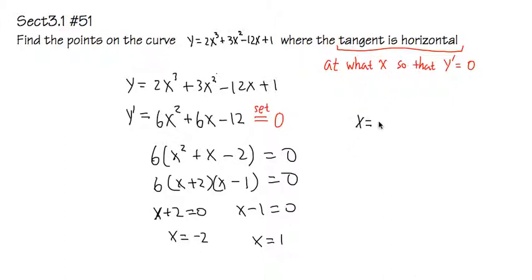If x equals negative 2, then y is just plugging negative 2 into the original equation. I'll end up with 2 times negative 2 to the third power plus 3 times negative 2 squared minus 12 times negative 2 plus 1. You work this out and get 21. So the first point is negative 2 comma 21.